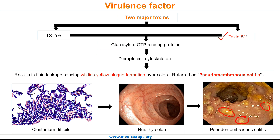As a recap on virulence factors: there are two toxins, Toxin A and Toxin B. Both toxins glucosylate GTP-binding proteins, which ultimately leads to disruption of cell cytoskeleton, manifesting as leakage of fluid seen as a whitish-yellow plaque over the colon — called pseudomembranous colitis.